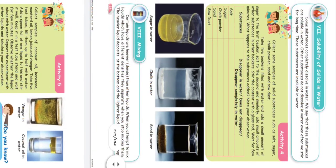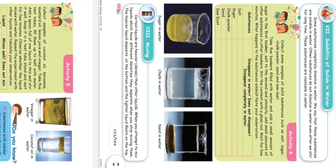Activity 4: Collect some samples of solid substances such as salt, sugar, chalk powder, sawdust, and sand. Take 5 beakers filled with water and add a small amount of sugar in the first beaker and salt in the second beaker. Add small amounts of other substances in the other beakers. Stir the content with a glass rod and wait for a few minutes.